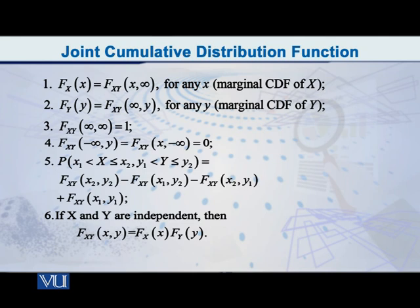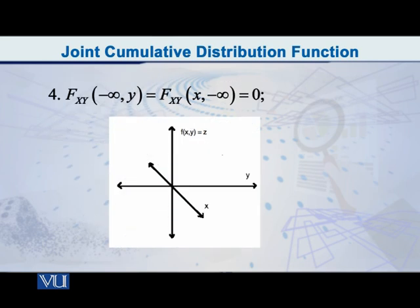After that, the fourth, fifth and sixth properties — I would like to discuss them in some detail. The fourth property reads as follows: capital F of the random vector XY at the point minus infinity, y is equal to 0. And at the same time, capital F of the random vector XY at the point x, minus infinity is equal to 0.